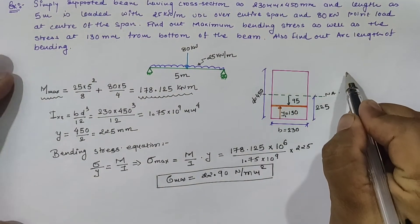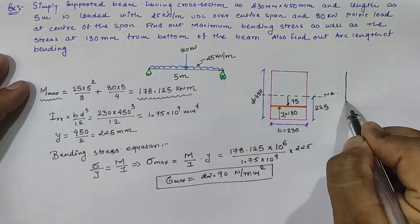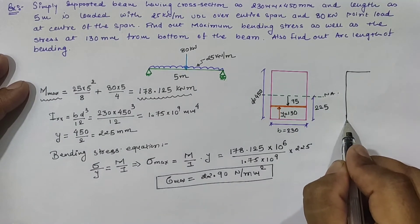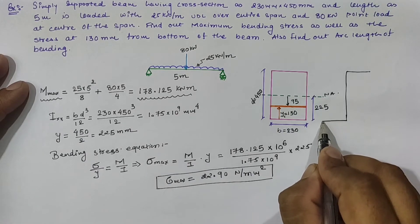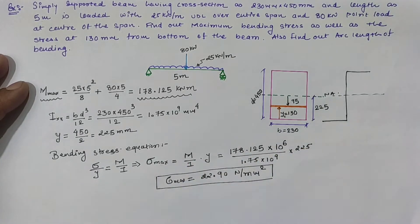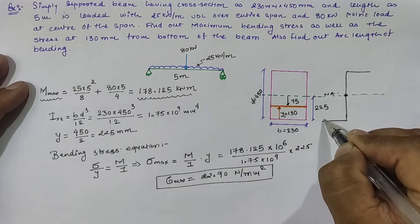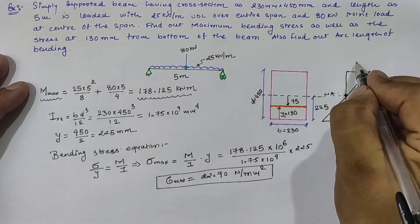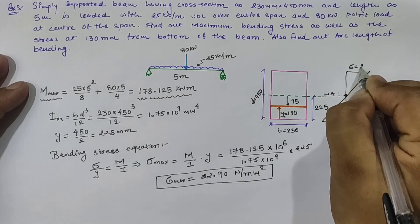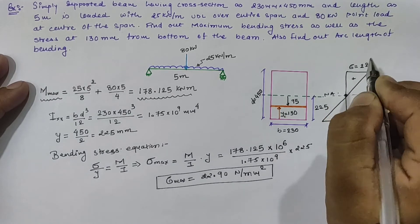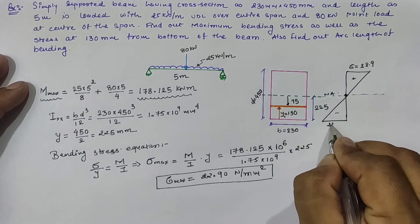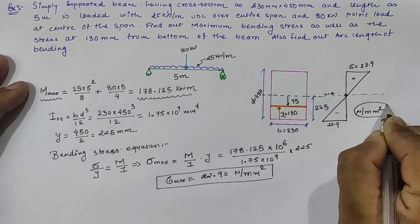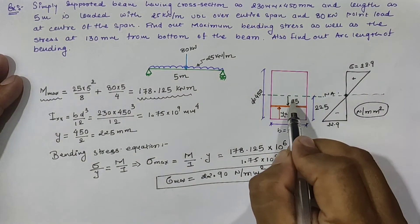For the bending stress diagram, taking the vertical reference axis, the value at the top is tension at 22.9 N/mm² and at the bottom is compression at 22.9 N/mm², while at the neutral axis the value is zero. The bending stress diagram is connected by a straight line as drawn in the figure.